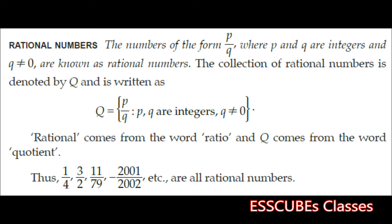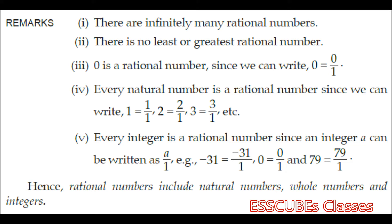The numbers of the form P by Q, where P and Q are integers and Q is not equal to 0, are known as rational numbers. The collection of rational numbers is denoted by capital Q and is written as P by Q such that P, Q are integers and Q not equal to 0. Rational comes from the word ratio. Thus, 1 by 4, 3 by 2, 11 by 79, or minus 2001 by 2002 are all rational numbers.